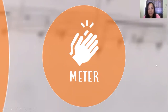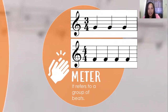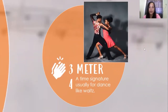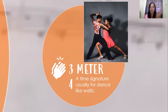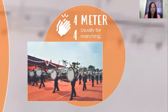Meter, on the other hand, is a group of beats. In music, meter is what we see in a musical staff — like 3/4 or 4/4. 3/4 is the time signature usually used for dances like the waltz, where the counting is 1-2-3, 1-2-3, 1-2-3. And 4/4 is the time signature usually used in marching.